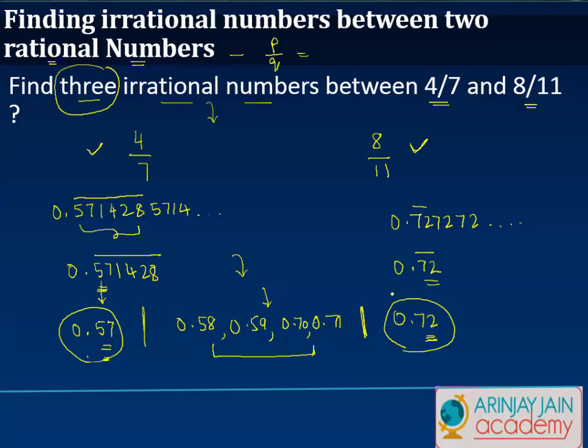Just at the cost of repetition, to find the irrational numbers, what we need to do is first we need to convert these rational numbers into decimal form by long division method. Once we have done that, we see what are the first two digits of each of these decimal numbers which we have obtained by the long division method, and then as we see these two numbers, whatever lies in between is going to be an irrational number which lies between these two given rational numbers.